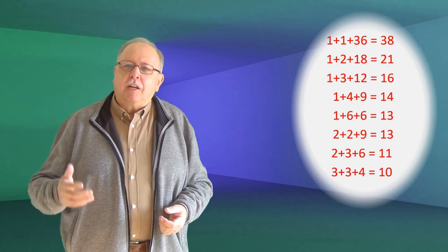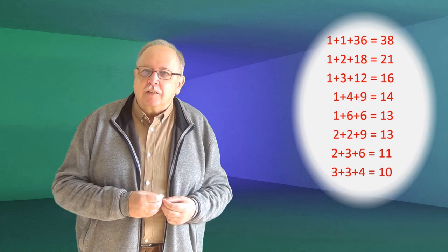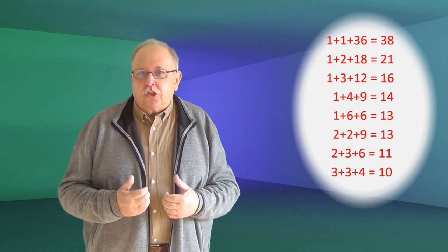Dacă numărul de casă ar fi fost 38, 21, 16, 14, 11 sau 10, ar fi putut spune imediat vârsta fetelor, pentru că aceste numere se referă la o sumă unică. Înseamnă că numărul de casă trebuie să fie 13. El corespunde la două sume posibile: 1 plus 6 plus 6 sau 2 plus 2 plus 9. De aceea, profesorul spune, tot nu pot să spun încă vârsta fetelor.